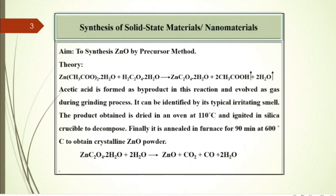Acetic acid is formed as byproduct in this reaction and evolved as gas during grinding process. It can be identified by its typical irritating smell. The product obtained is dried in an oven at 110 degrees centigrade and ignited in silica crucible to decompose. Finally, it is annealed in furnace for 90 minutes at 600 degrees centigrade to obtain crystalline zinc oxide powder and the reaction is as shown over here.